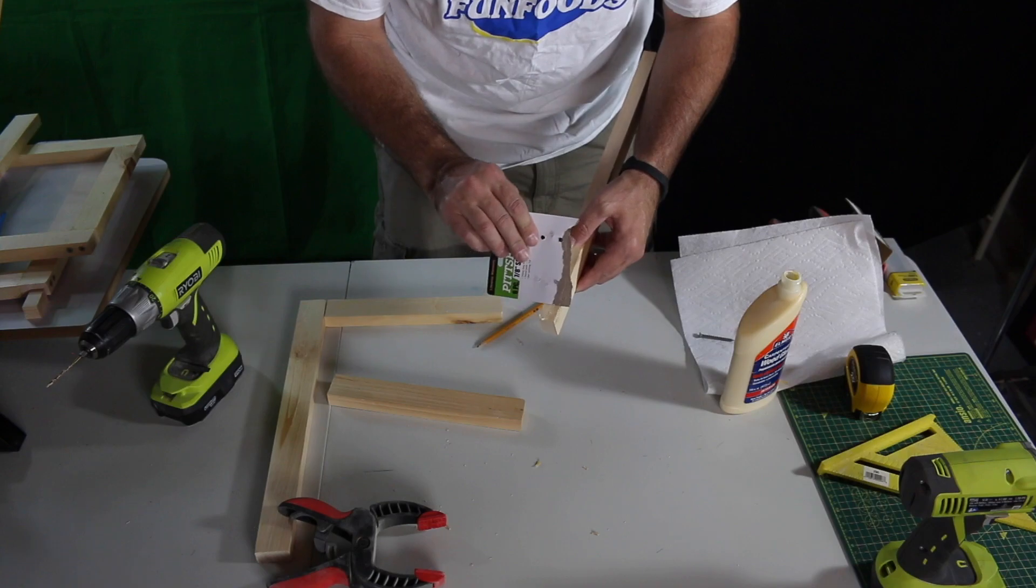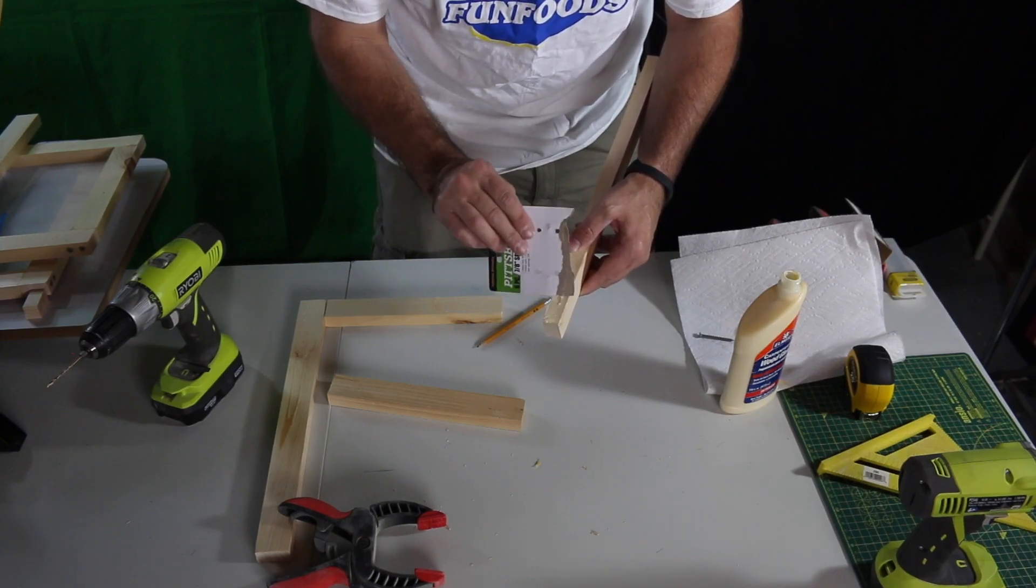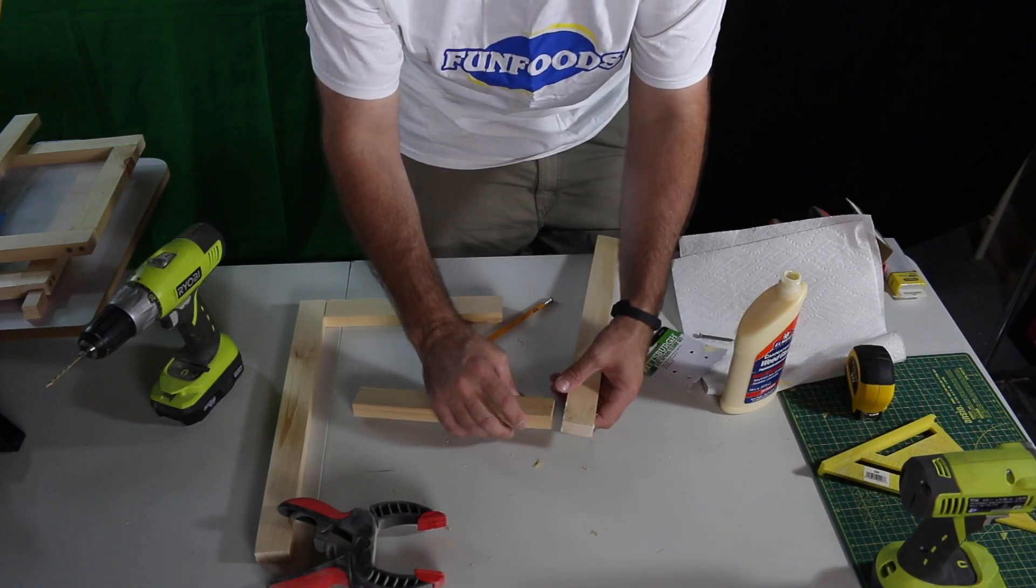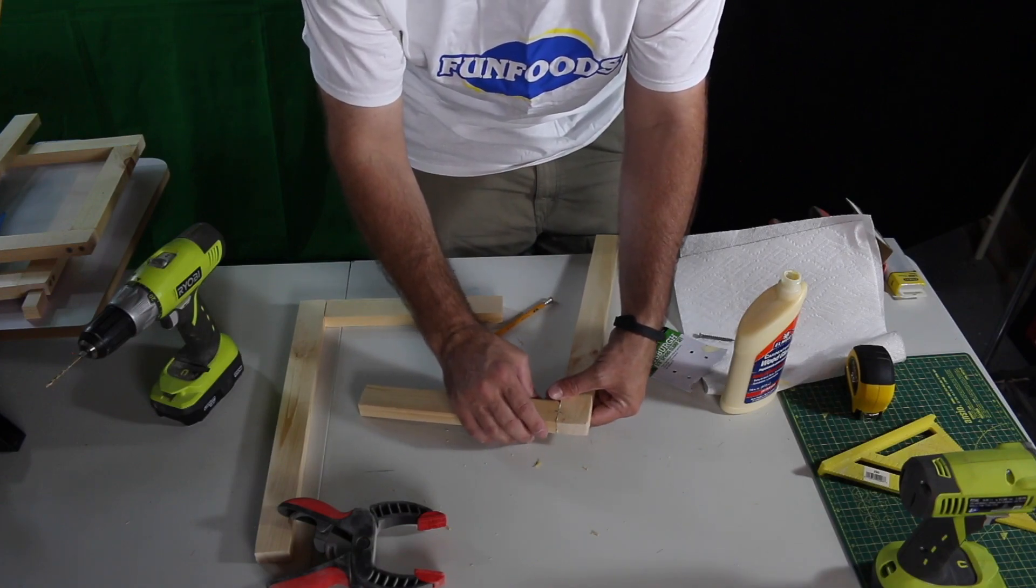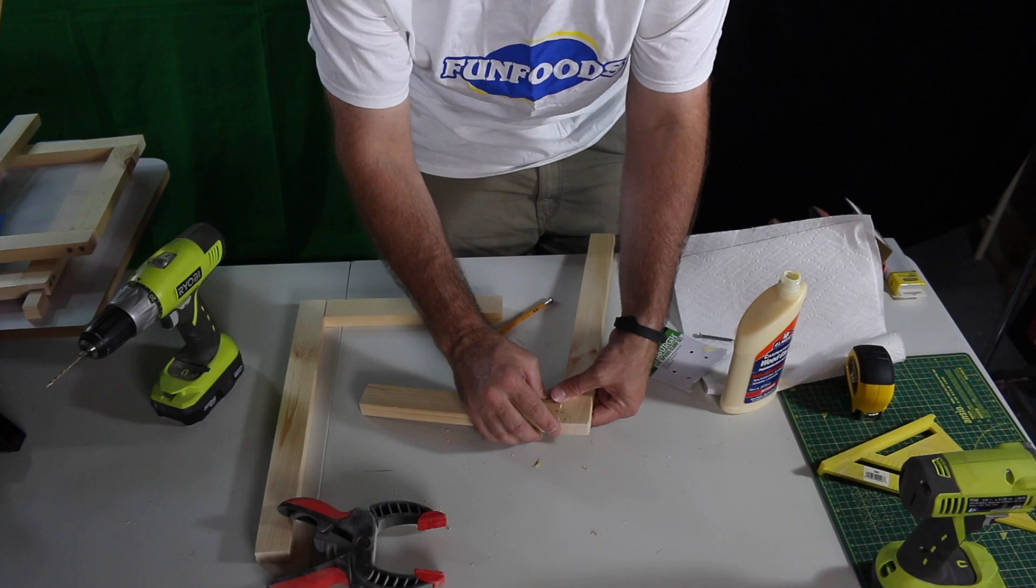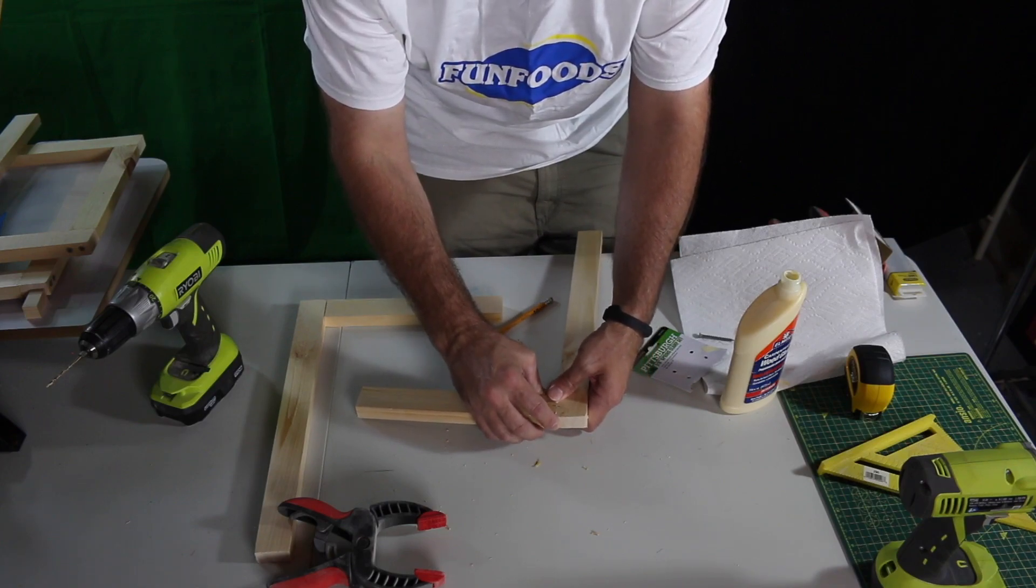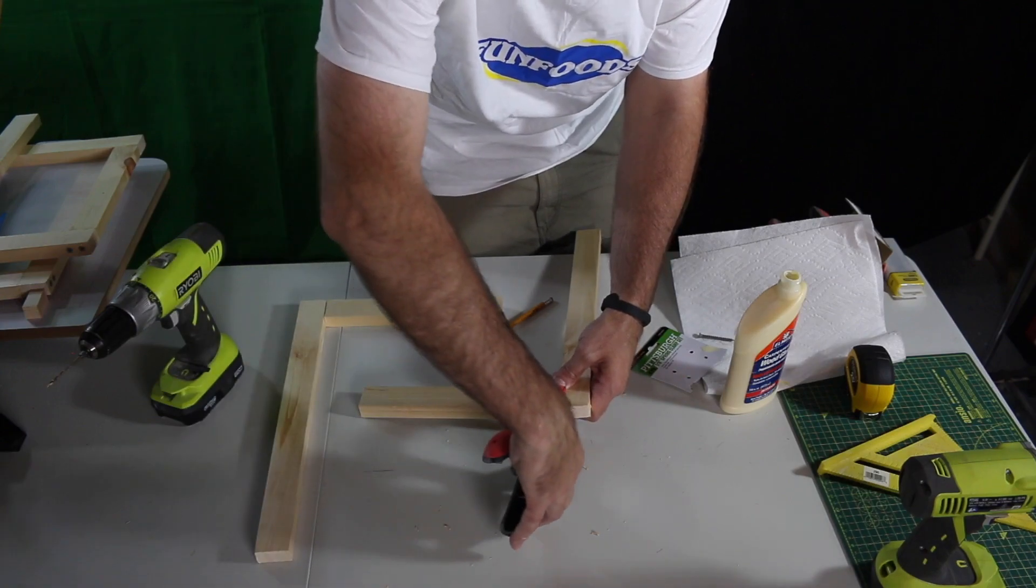Now just smear some wood glue in between the two pieces of wood and this is just going to add as extra support. It's not 100% necessary but it will help. Line your two pieces of wood up using that line that we drew.